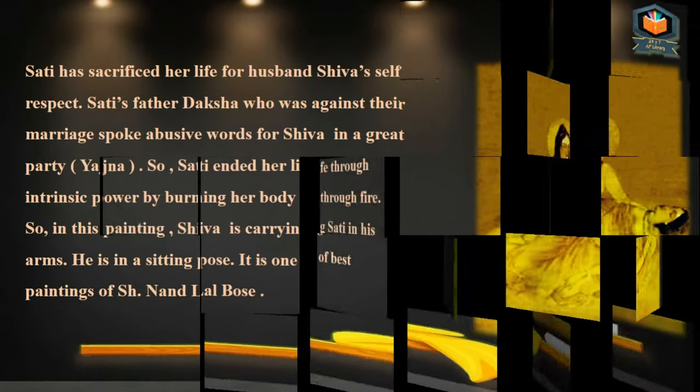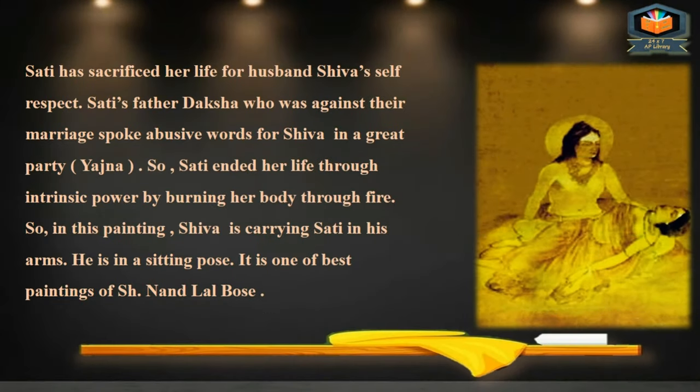The story is that Sati sacrificed her life for her husband Shiva's self-respect. Sati's father, Daksha, who was against their marriage, spoke abusive words for Shiva in a great party, Yajna. So Sati ended her life through intrinsic power by burning her body through fire.